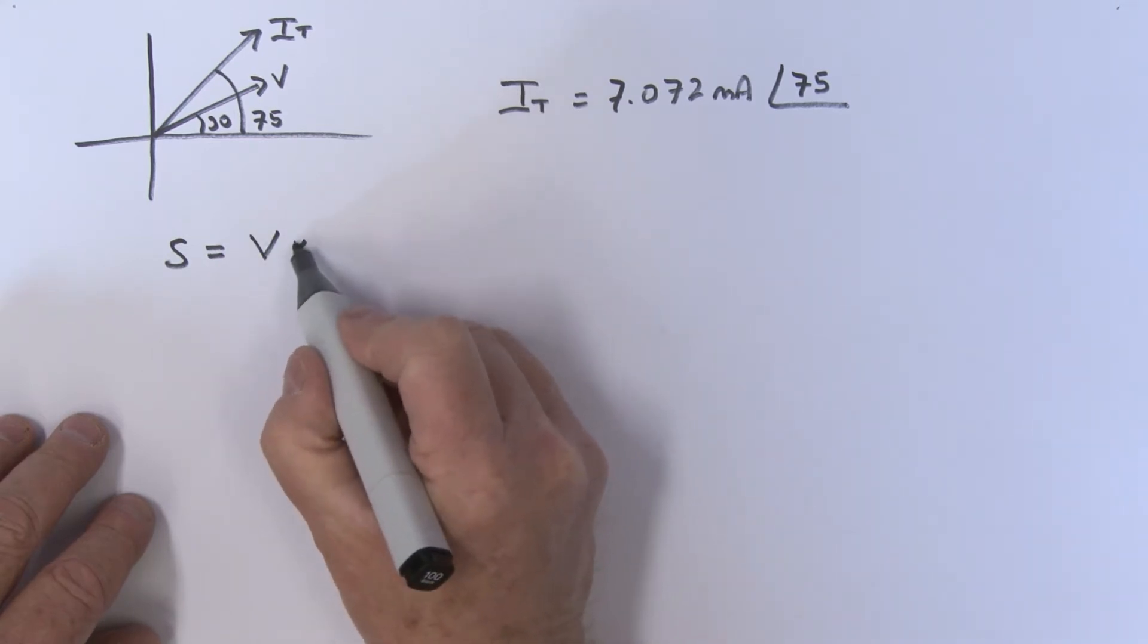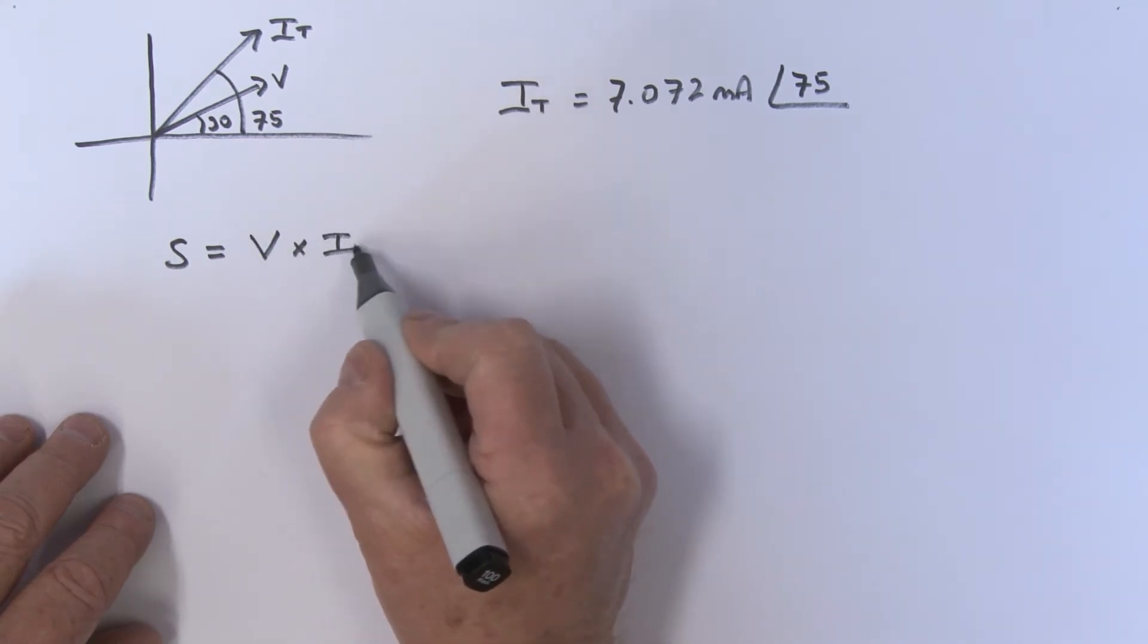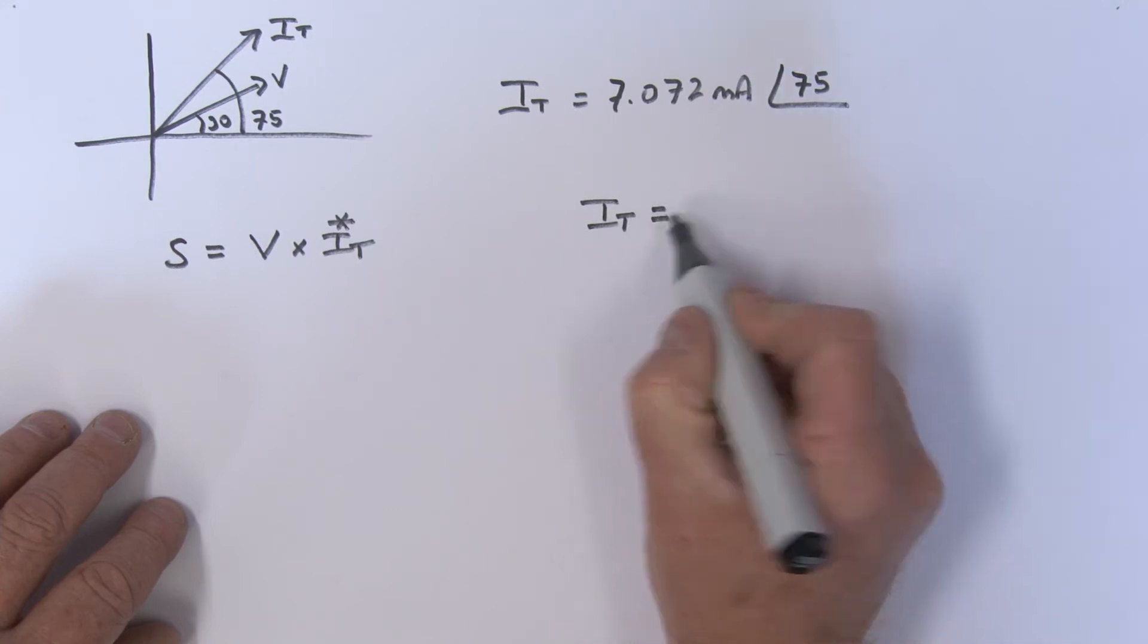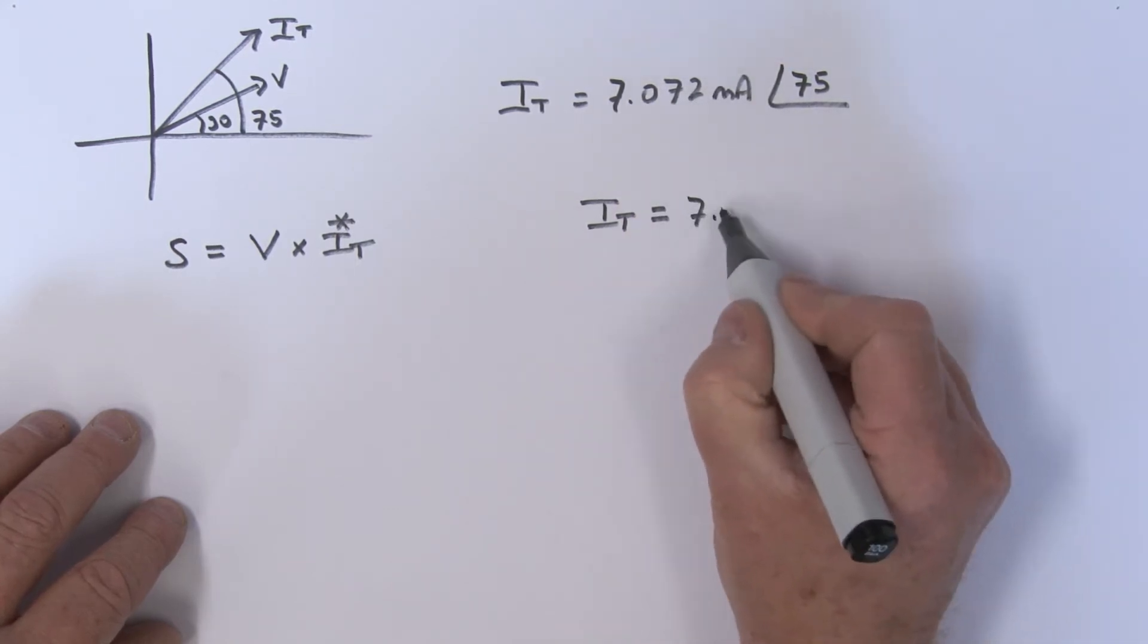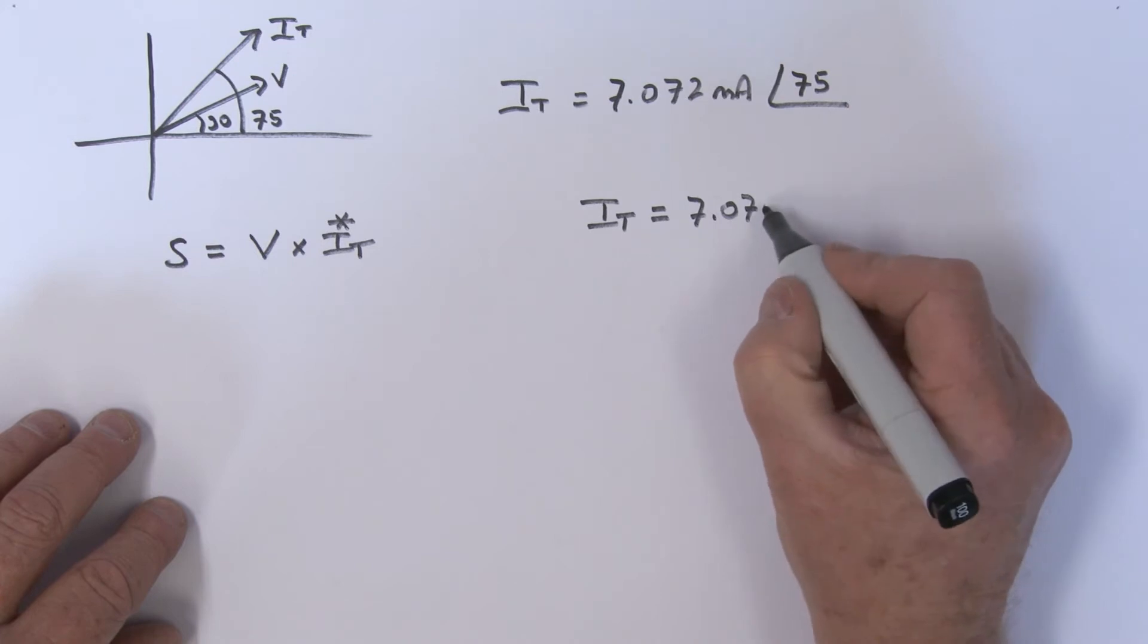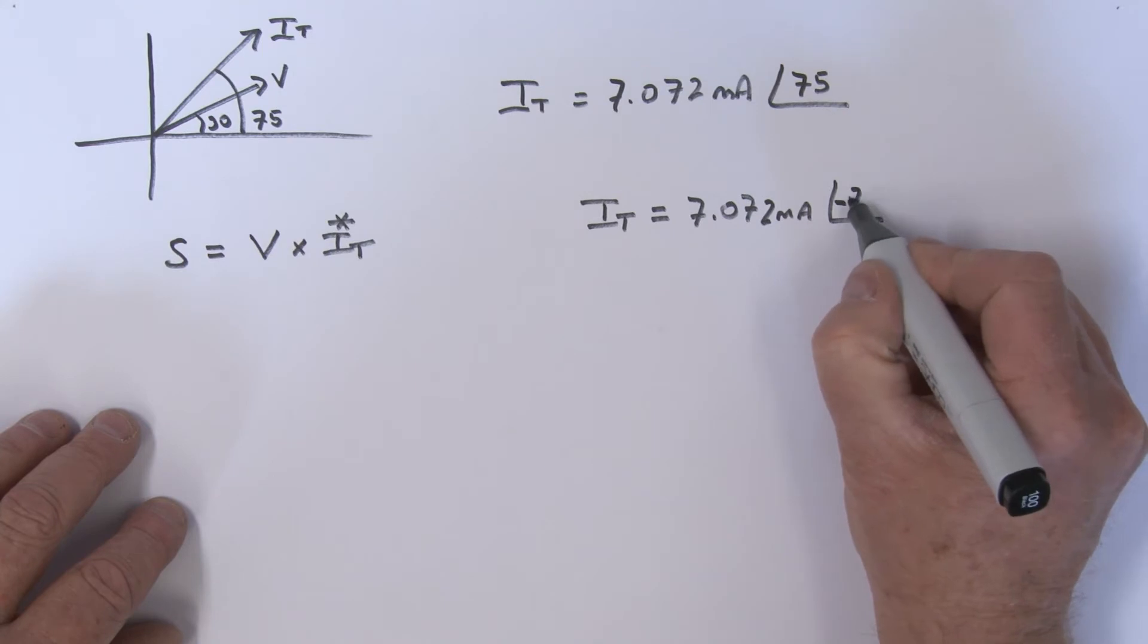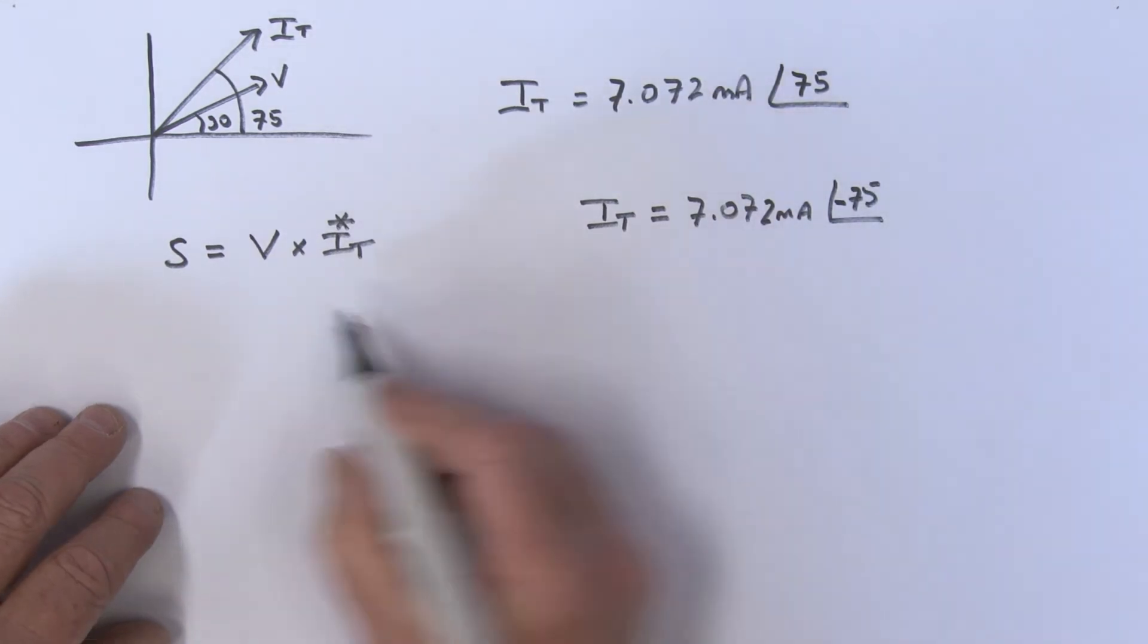Okay, so the apparent power S is equal to the voltage source V multiplied by IT, but it's the complex conjugate of IT. The complex conjugate of IT is simply equal to same magnitude, 7.072 milliamps, but the angle of course is a minus 75.